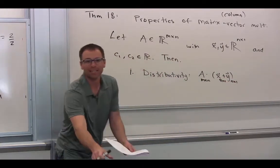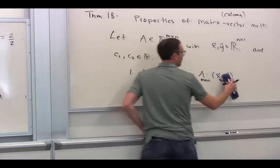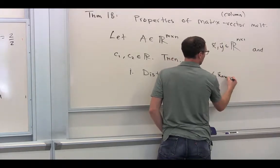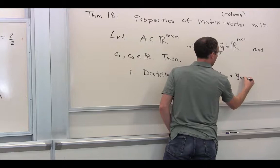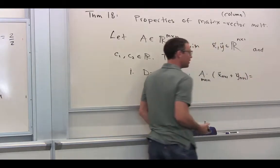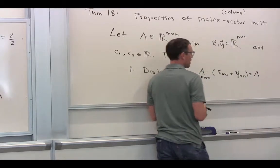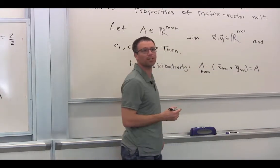Where is that addition happening? In what space is it happening? What size, though, is what I mean. Can you guess what we're going to say about this? The result for sure is an n by 1, but if I call this distributivity, can you guess what we're going to say?